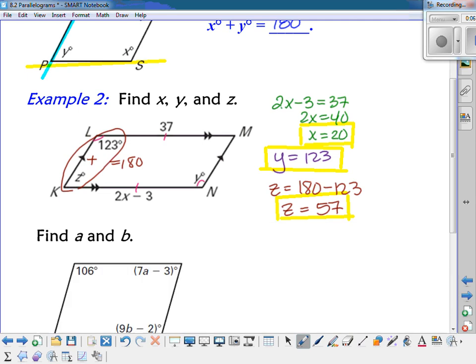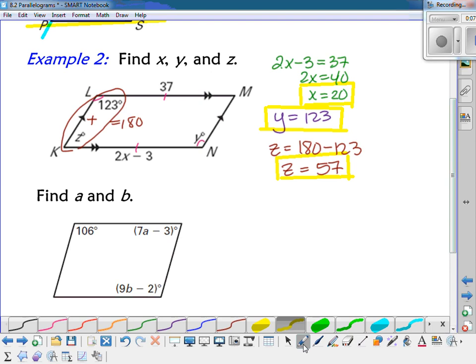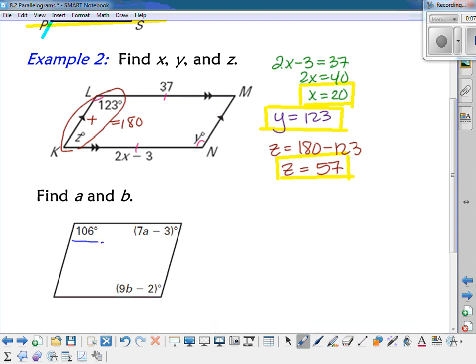Here's another one for your notes. On this one, we're going to find a and b. So I know that 106 plus 7a minus 3, those are consecutive interior, so they're going to have to equal 180. So if I combine my like terms, the 106 minus 3, I get 103 plus 7a equals 180.